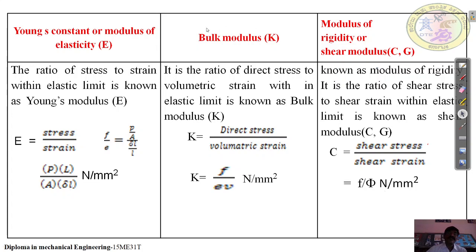Bulk modulus K: modulus is stress by strain. Here the stress is direct stress and the strain is volumetric strain. It is the ratio of direct stress to volumetric strain within elastic limit, known as bulk modulus.